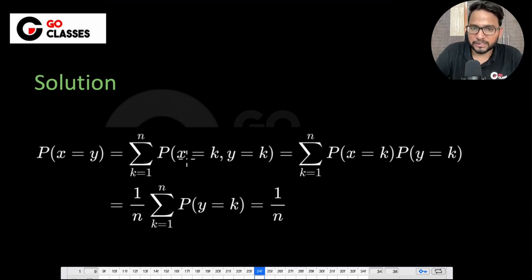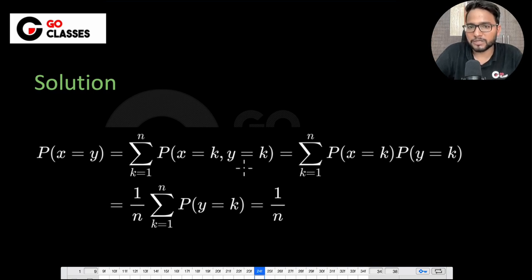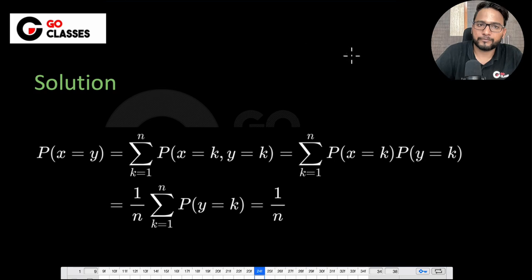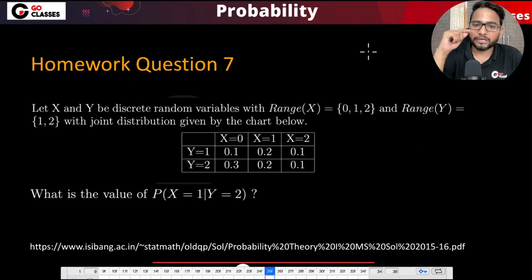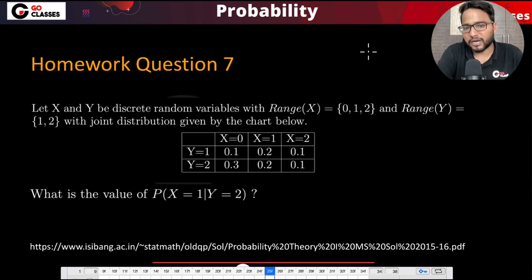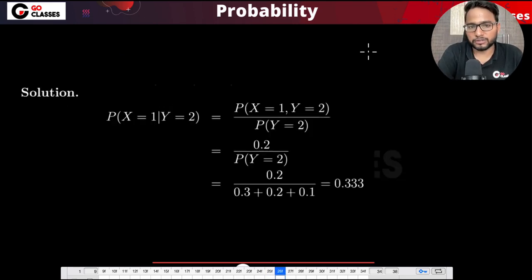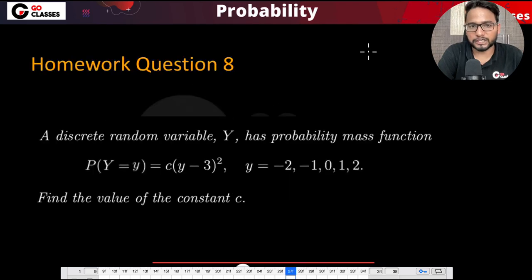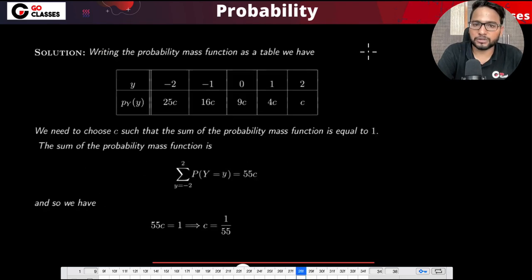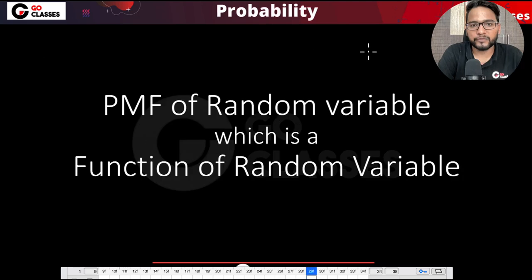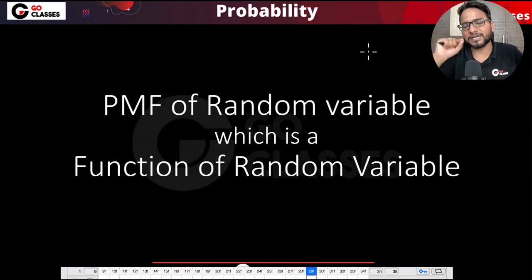The official solution uses sigma notation but follows the same approach. There are two additional homework questions — try them out, as solutions are on the next page. Now let's move to a new type of question: finding the PMF of a function of a random variable.